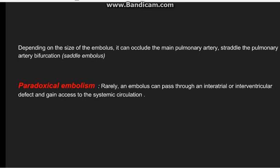From the pulmonary arterial vasculature, the embolus can remain in the main pulmonary artery, or it can enter into the pulmonary artery bifurcation where it is known as a saddle embolus. There is also a term known as paradoxical embolism, where the embolus present at the bifurcation on the right side of the heart passes to the left side of the heart via an interatrial or interventricular defect, and from there enters into the systemic circulation.